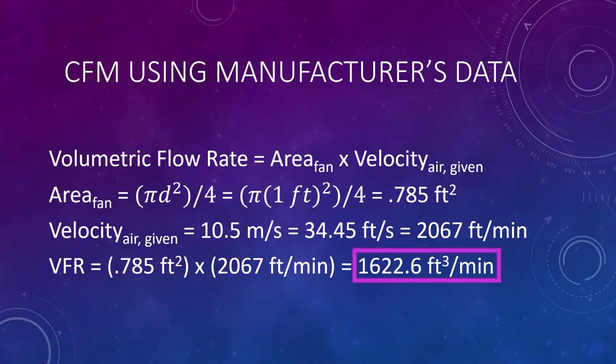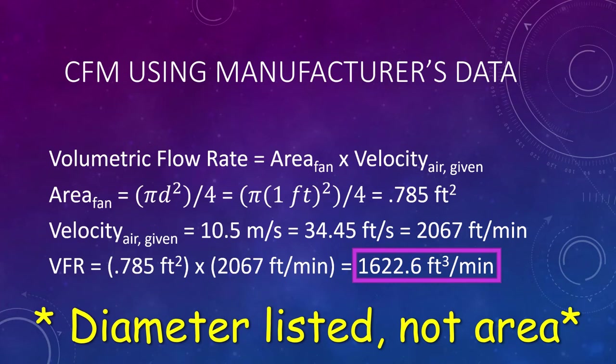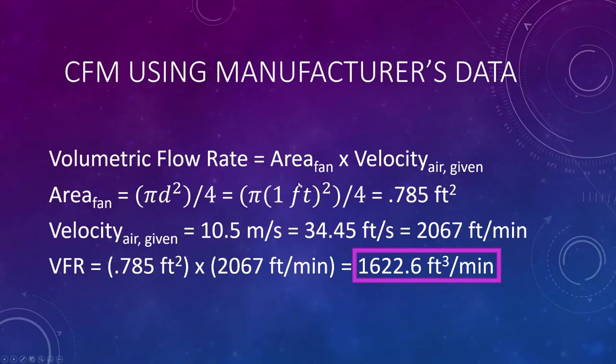Now that I've got my measured values from testing, the next thing I want to do is pop them into the formula. And then I'll be able to compare what I ended up getting from the testing against what the manufacturer claims they can get out of these fans, which is 1800 CFM. So before I get into that, first thing I want to do is pop in the velocity and the area that was listed on Amazon. So the area listed was 12 inches, which in this case is going to be one foot. And then the velocity they claim they can get is 10.5 meters per second.